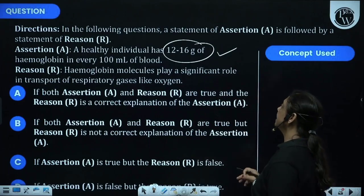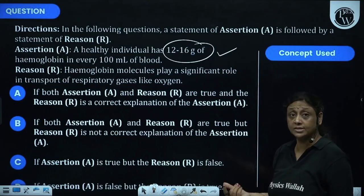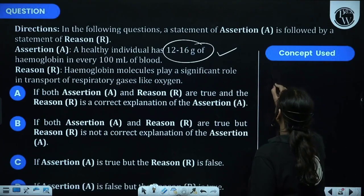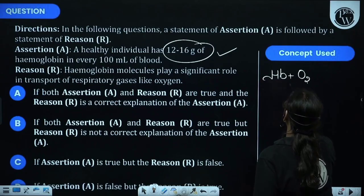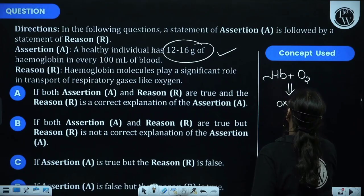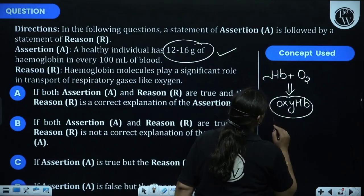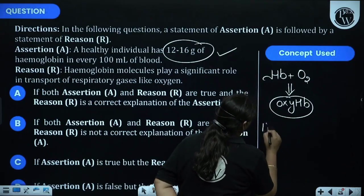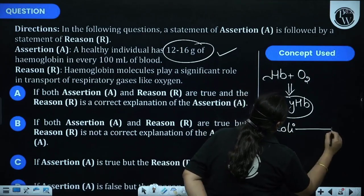Hemoglobin molecules play a significant role in the transport of respiratory gases like oxygen. This is absolutely correct. Hemoglobin molecules which are present in the blood, they bind. One hemoglobin molecule binds with four oxygen molecules, and the structure that forms we call it oxyhemoglobin. And this oxyhemoglobin transports oxygen from alveoli to tissues.